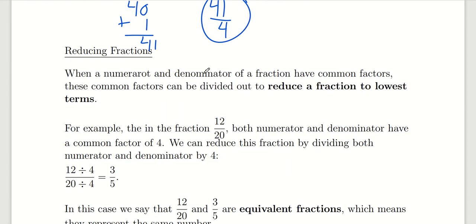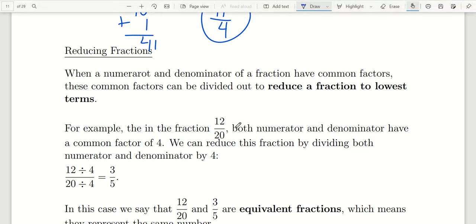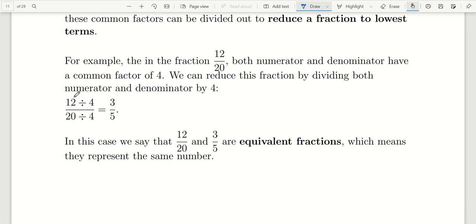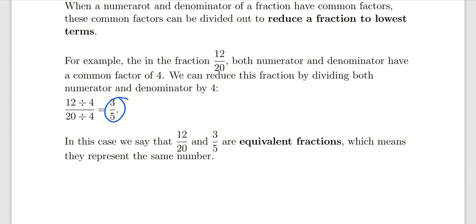Whenever we work with fractions, we would like to have them in reduced form. A fraction will be in reduced form if the numerator and denominator don't have any common factors. For example, if we look at the fraction 12 over 20, both numerator and denominator have a greatest common factor of 4. Because of that, we can divide both numerator and denominator by 4, which reduces it to 3 fifths. Even though 12 over 20 and 3 out of 5 are equivalent fractions, 3 fifths is in simplest terms because the numerator and denominator no longer share any common factors.